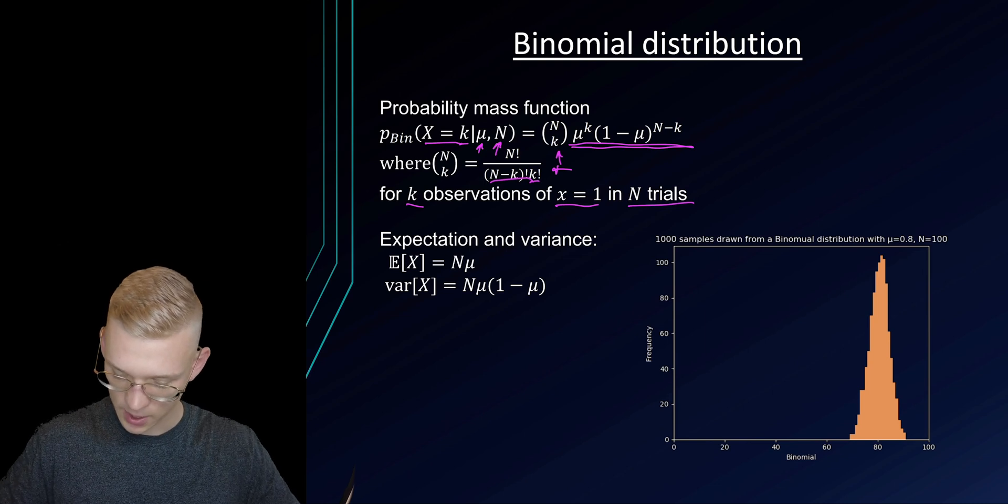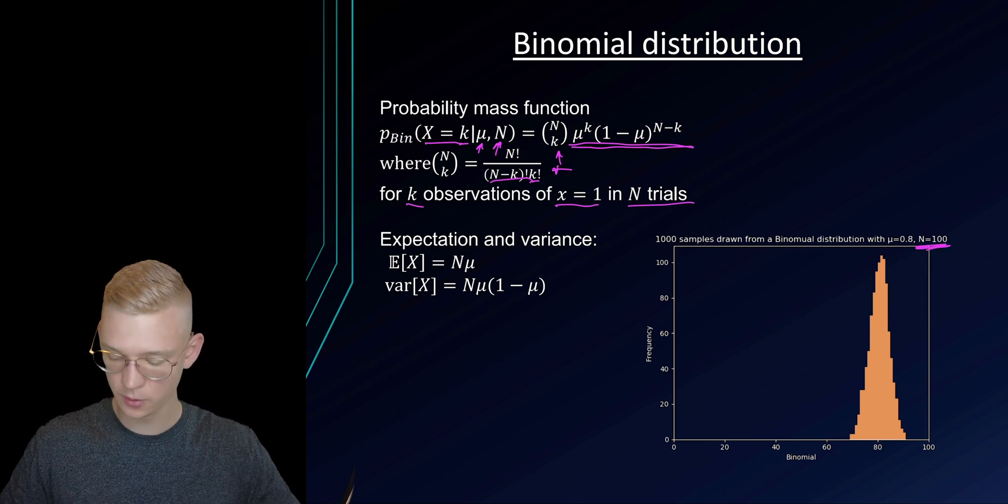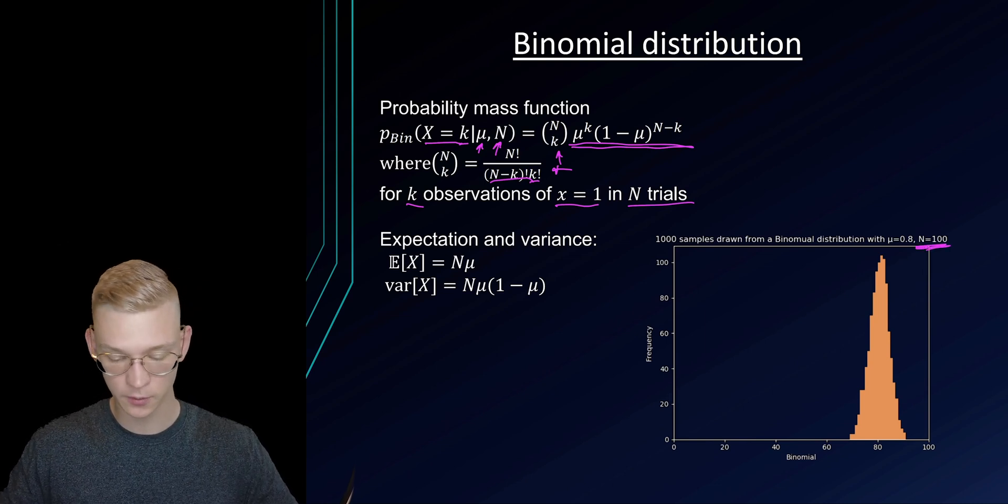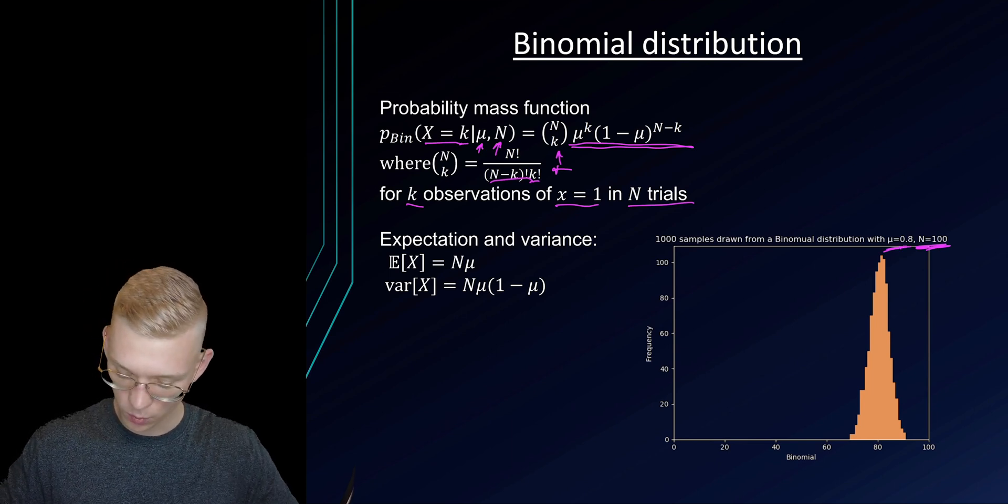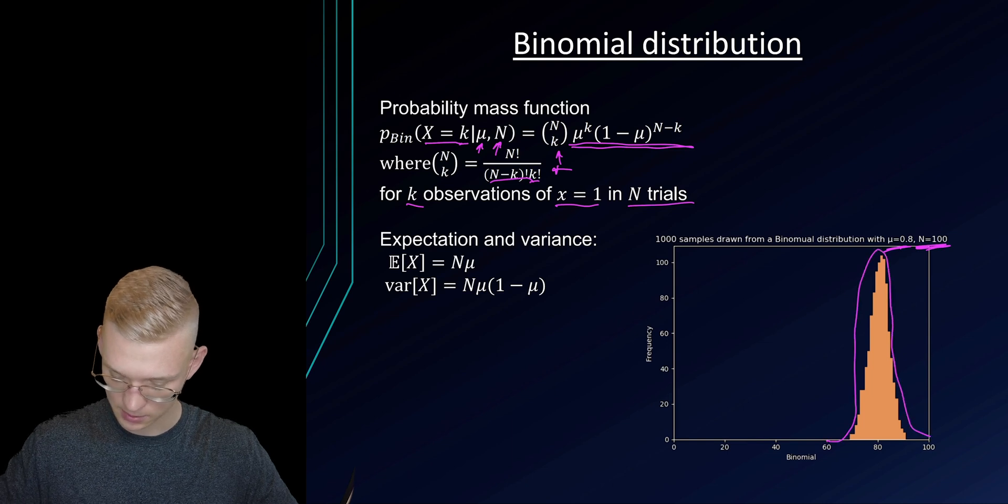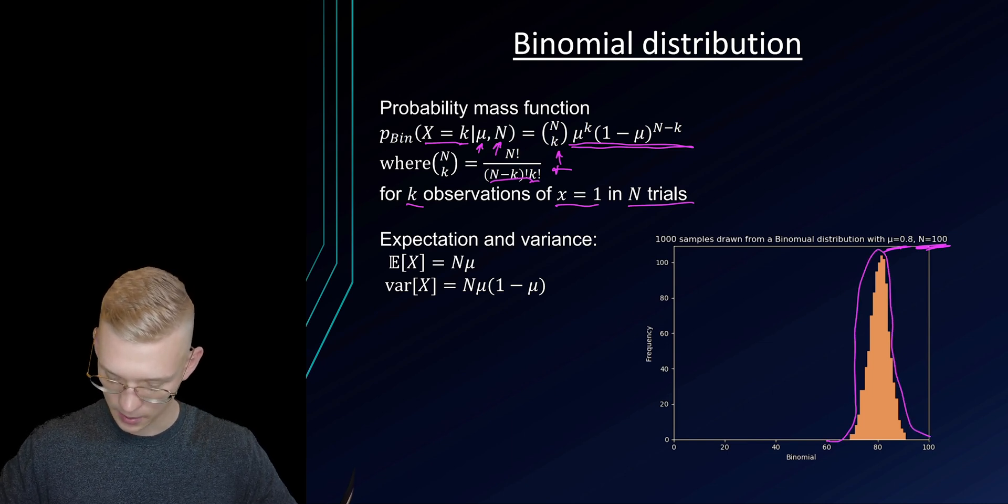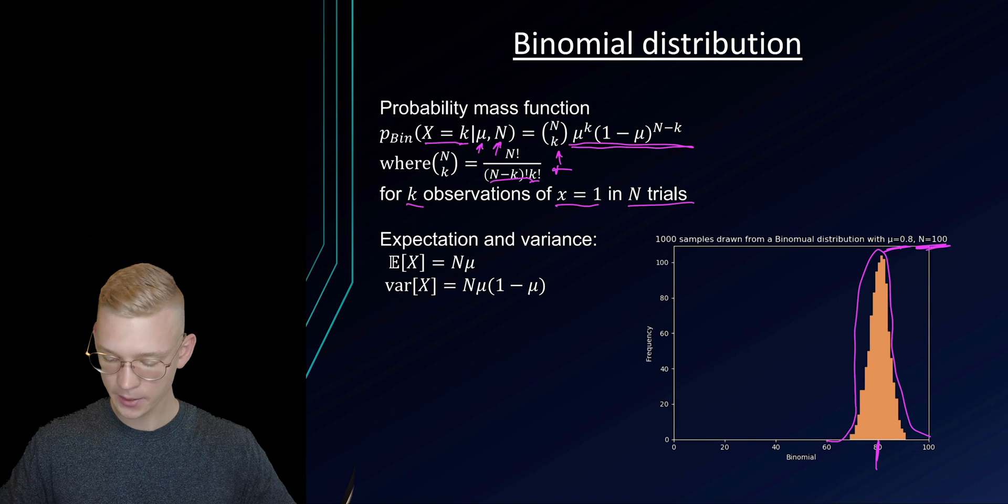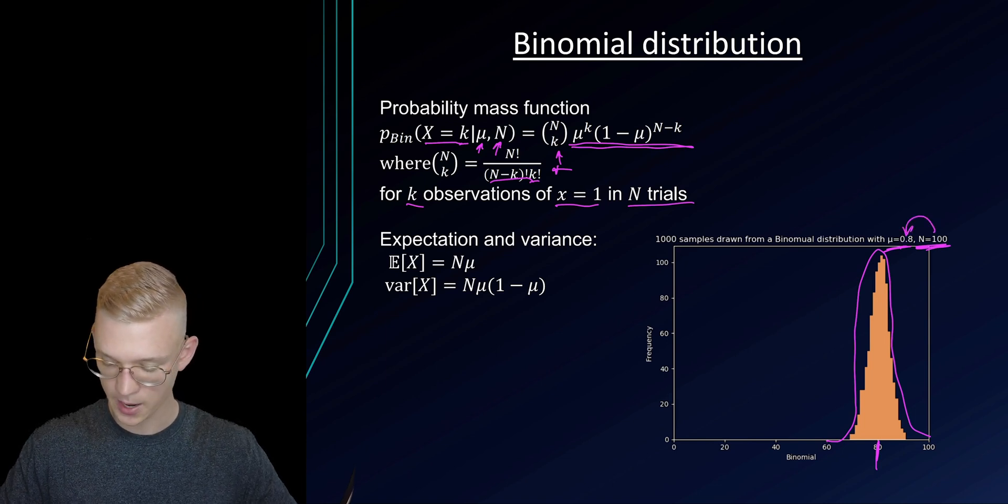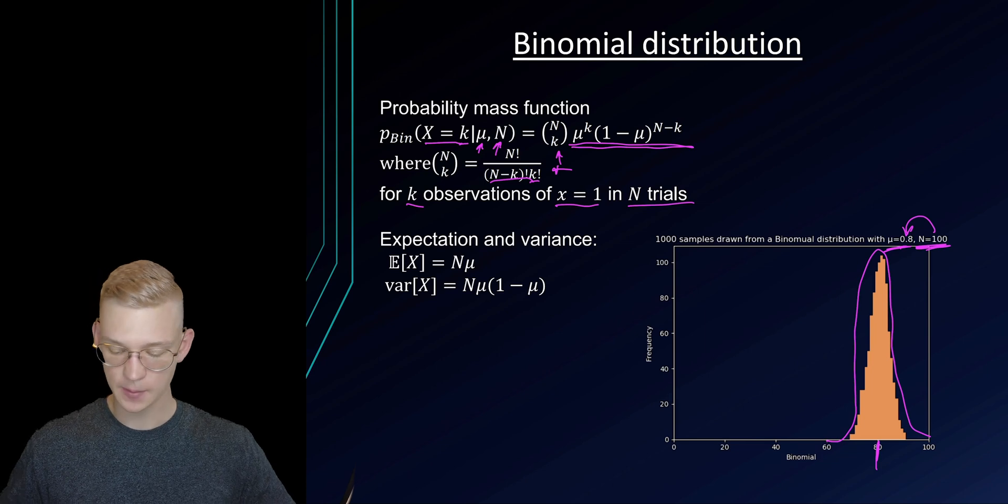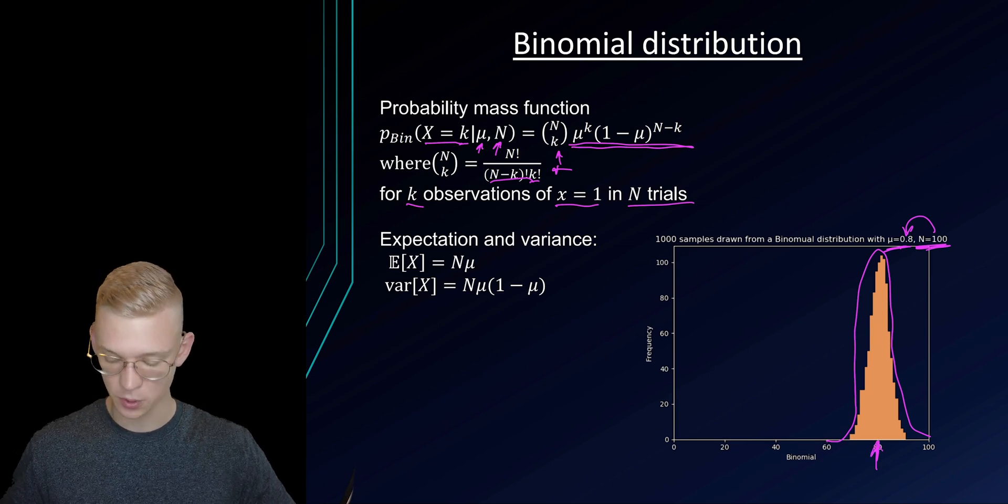So if we say that we have 100 times we performed this experiment with mu equals 0.8, we will get a distribution like this. So the probability of getting 80, because 0.8 times 100, this will be our most probable value.